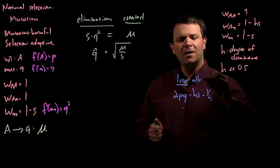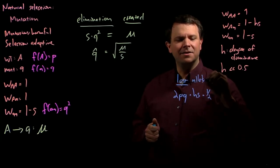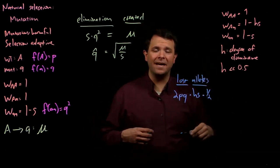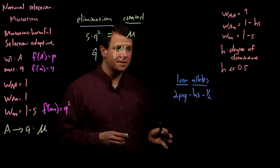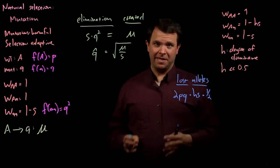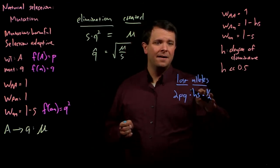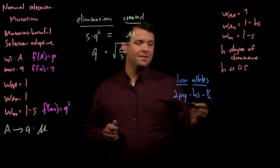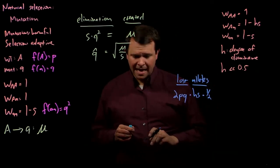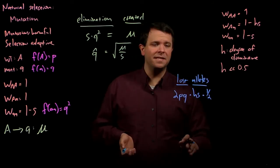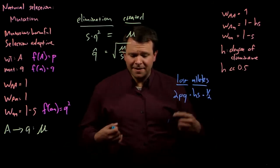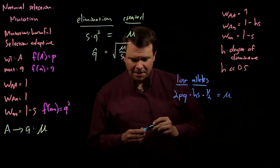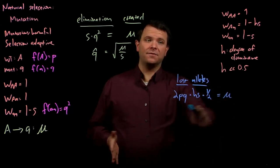Remember that we are looking at lost alleles. When a heterozygote fails to reproduce, we aren't losing 2 of the mutant alleles, we're only losing 1 of them. This is the rate that mutant alleles are lost due to selection, but they're still being created by mutation at a rate of mu. At equilibrium, these rates are the same.